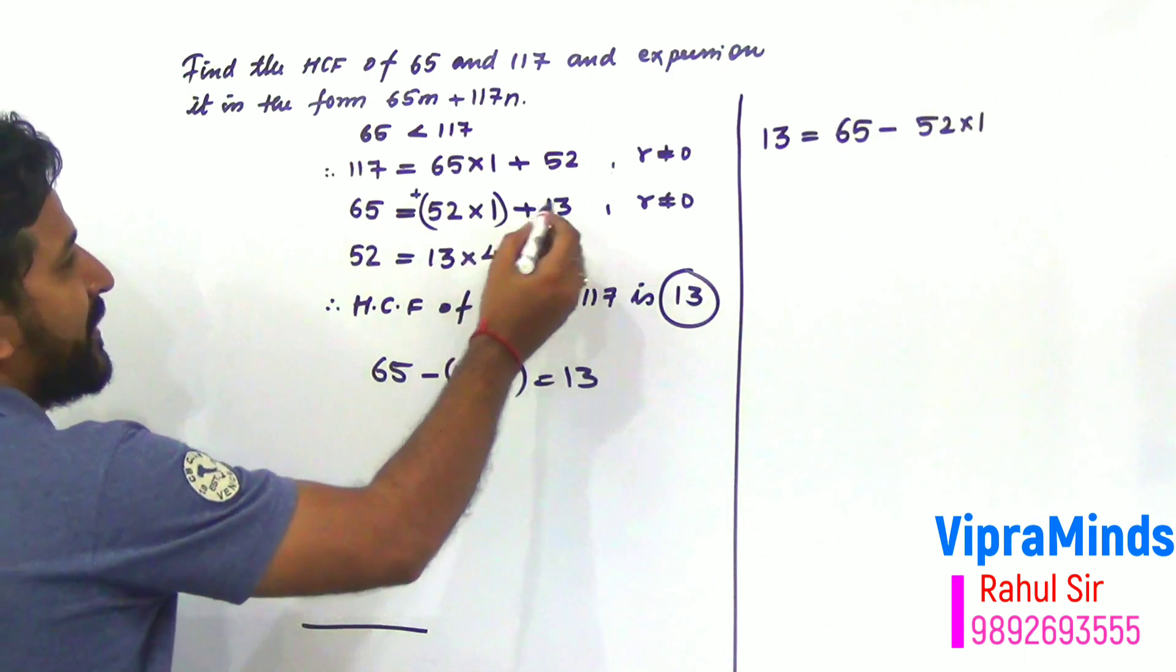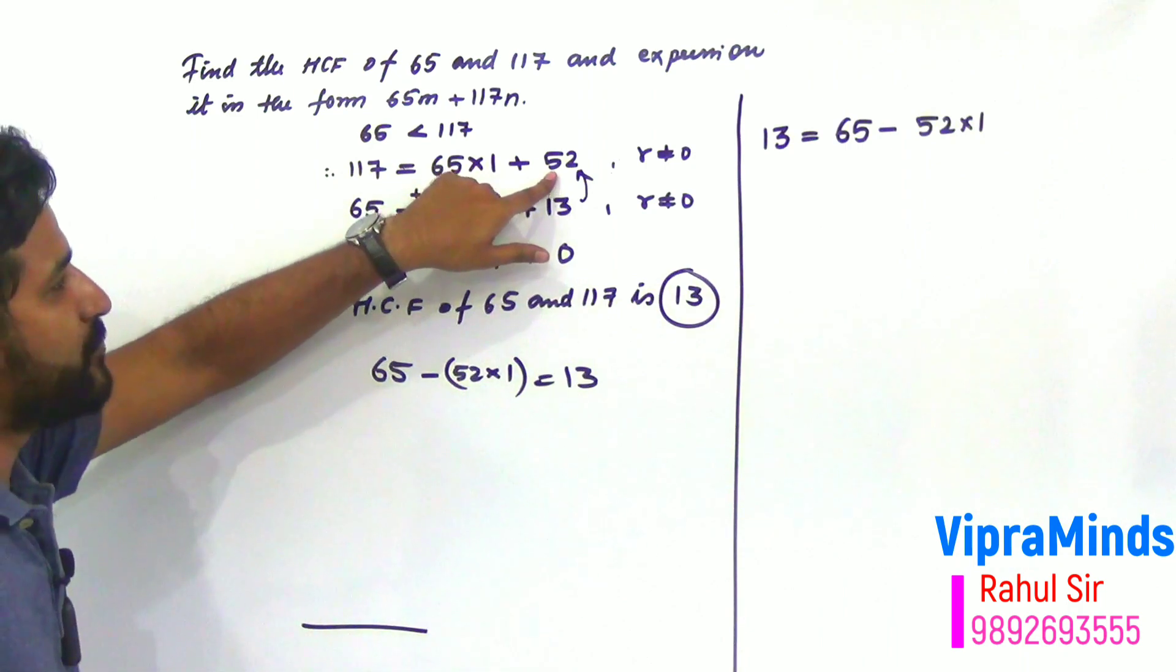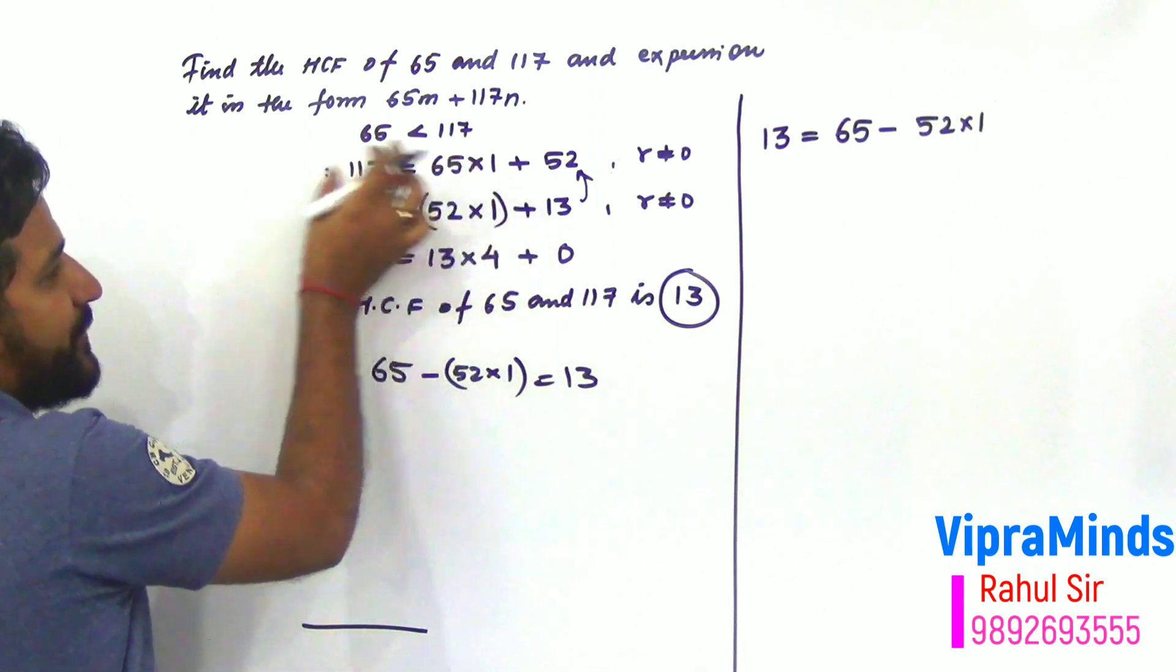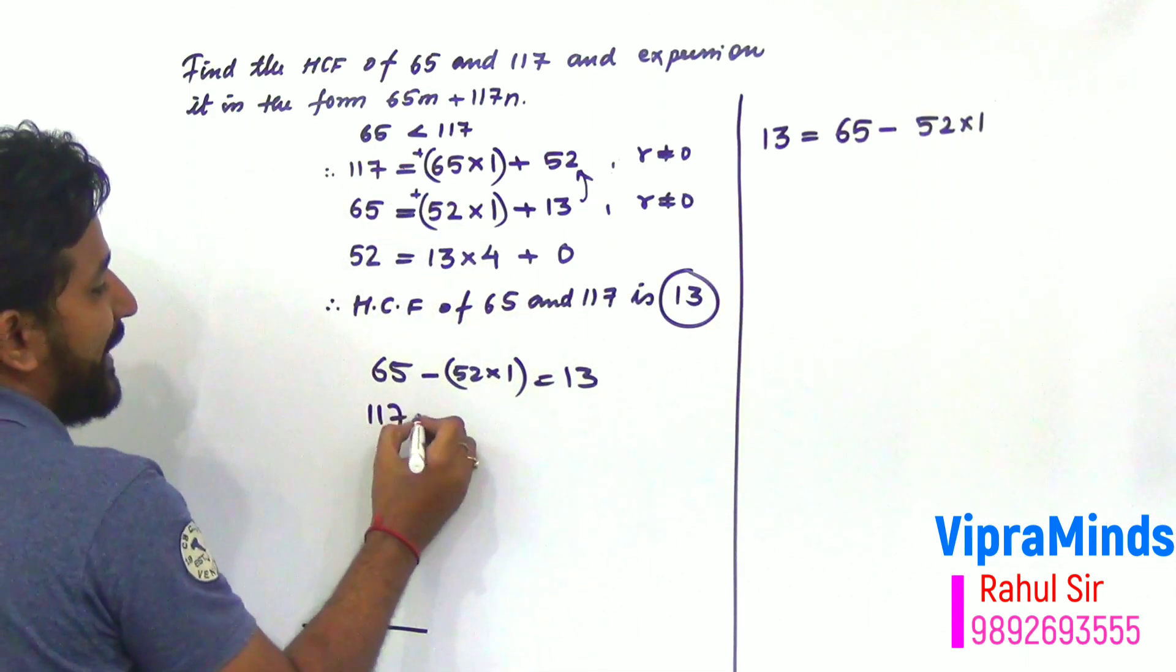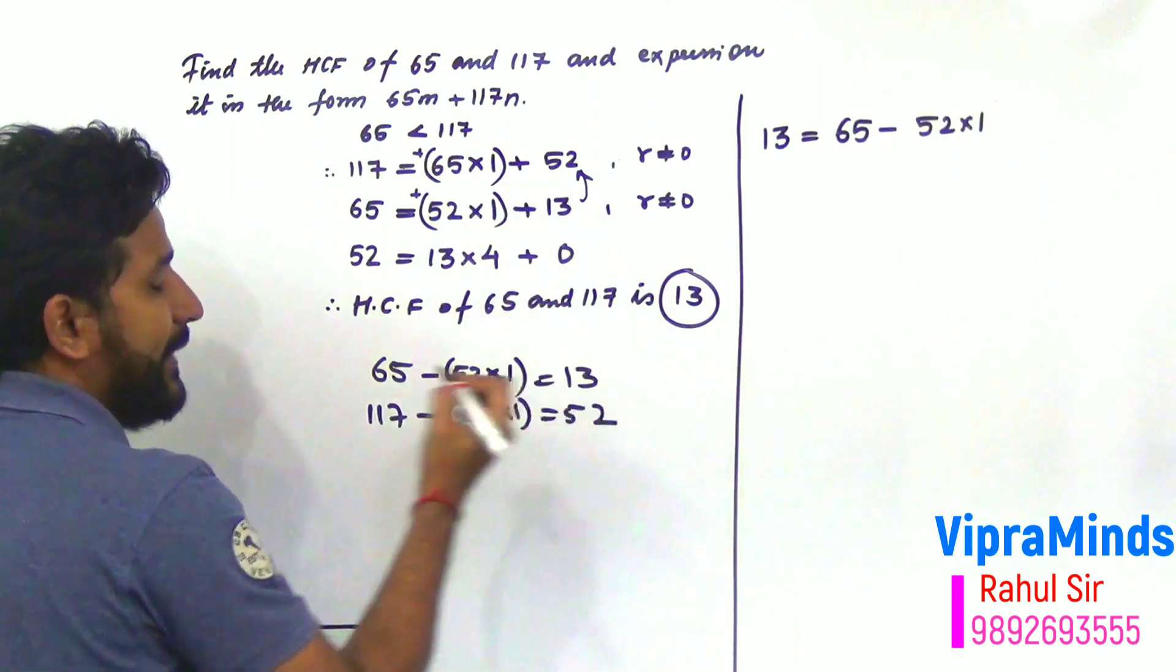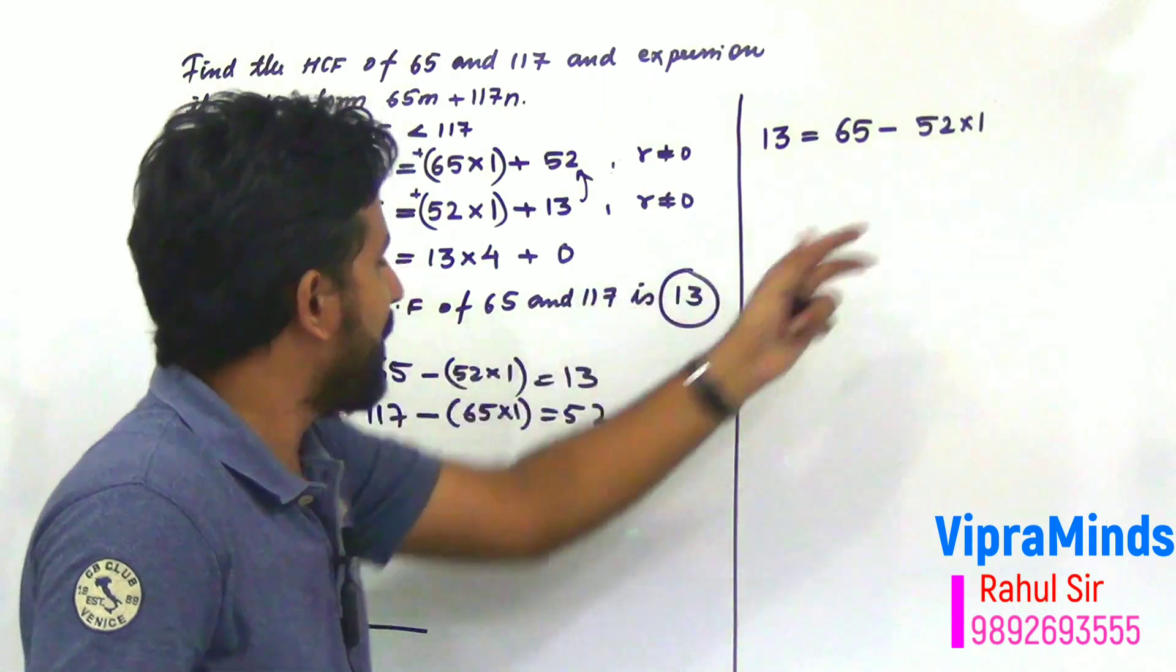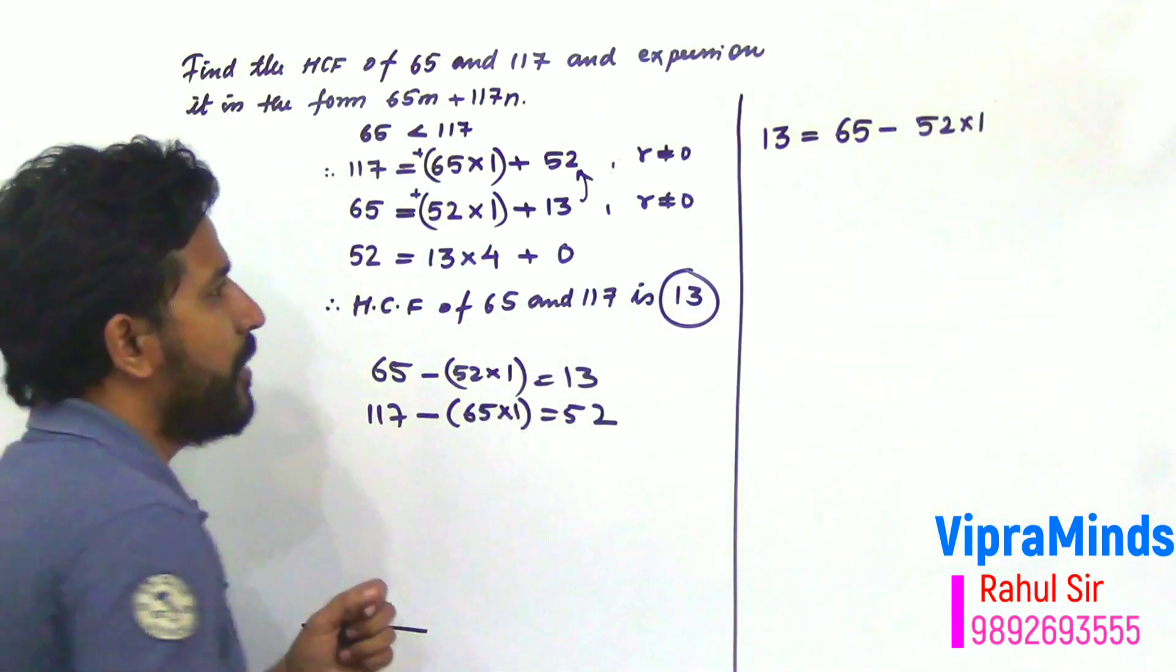Now, the next step is, we'll go to previous step. That is, here we see 52 is the remainder. Now, we'll make 52 as subject. If we make 52 subject, it will be 117. If we shift this, again here no sign means plus. If we shift here, that is, 117 minus 65 into 1 equals to 52. That means 52 equals to 117 minus 65 into 1. In this step, where 52 is there, we will replace it by 117 minus 65 into 1.